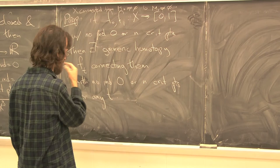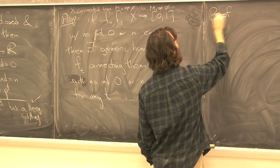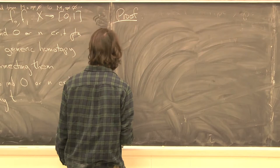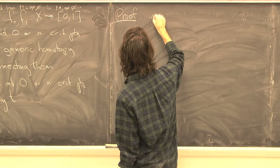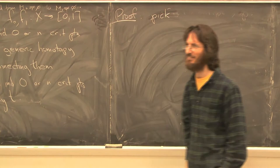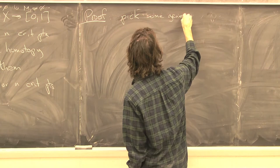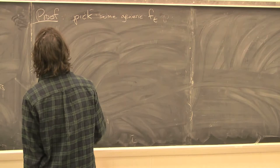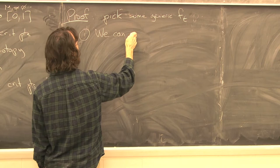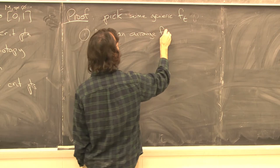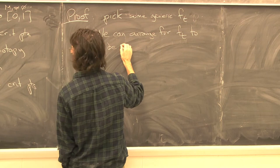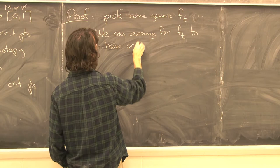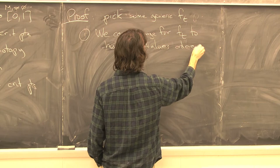For the proof, we'll use the Cerf graphic. We know that generic homotopies are generic, so pick one. The first claim is that we can arrange for the homotopy x_t to have critical values ordered by index for all t. At the isolated times when it's not Morse, you can say the non-Morse point's critical value should be above all index-2 critical values and below all index-3 critical values, so that immediately thereafter the new index-2 and index-3 are properly ordered.